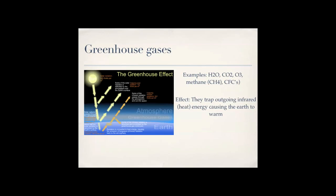Greenhouse gases include water vapor, CO₂, ozone (O₃), methane (CH₄), and CFCs — though CFCs were banned by the Montreal Protocol. The greenhouse effect is that these gases trap outgoing infrared heat energy, causing the earth to warm. The more of these compounds in the air, the warmer the earth gets.